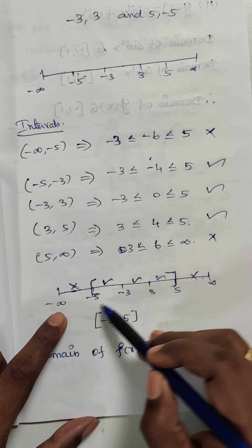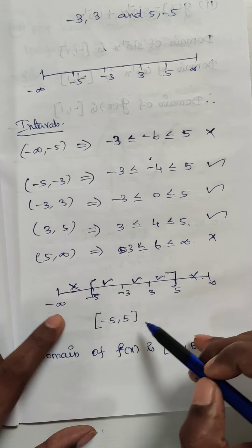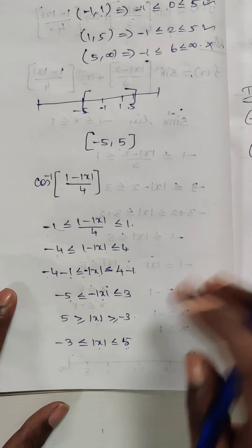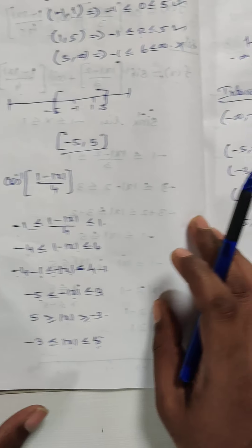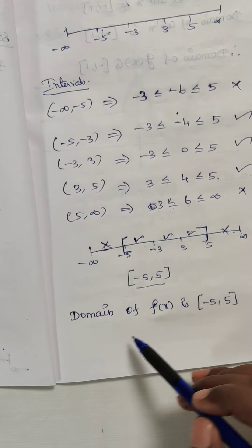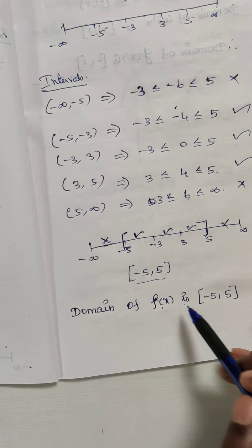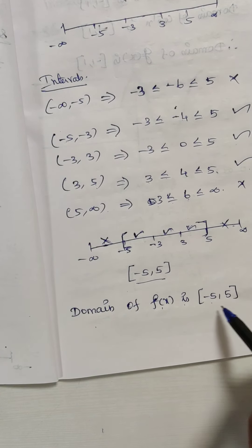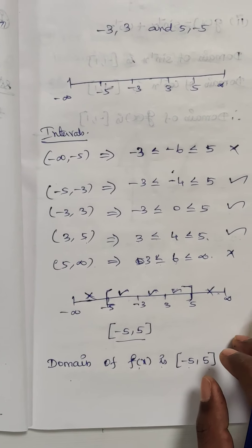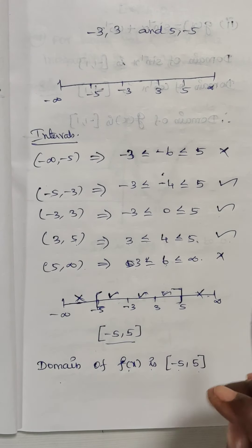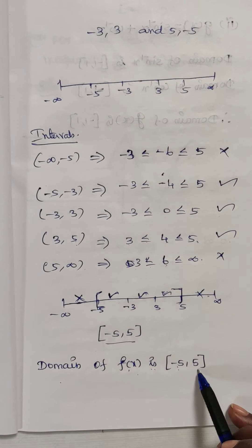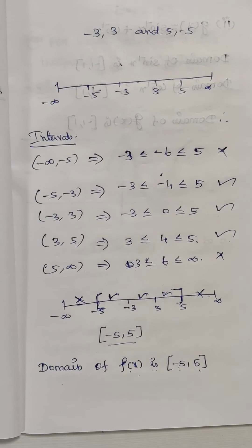So for both parts, the interval that exists is minus 5 to 5. Therefore, the domain of f of x is minus 5 to 5, that is the closed interval from minus 5 to 5. Thank you, children.